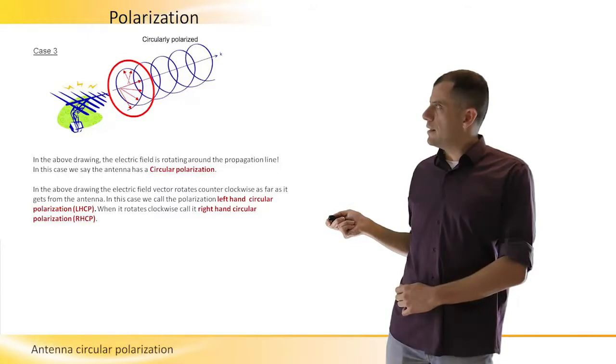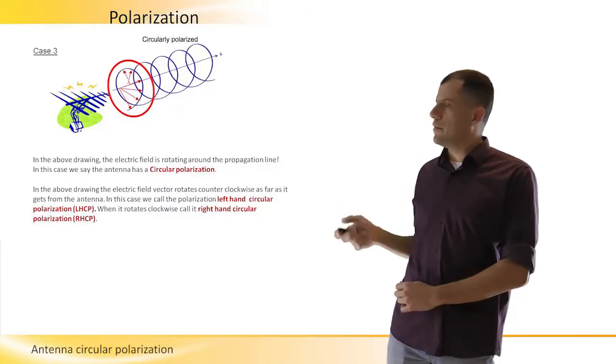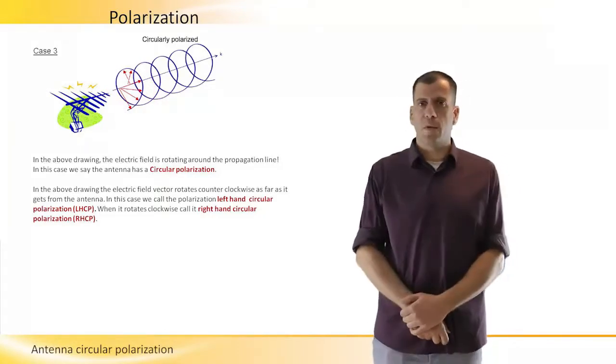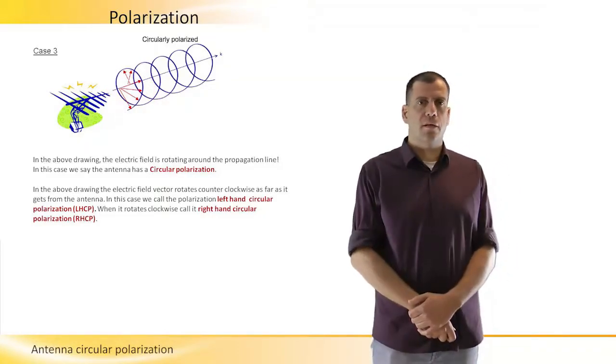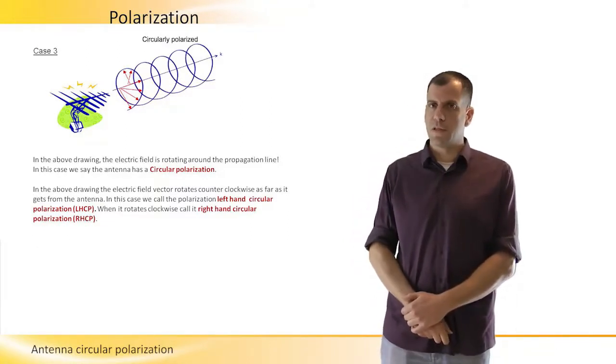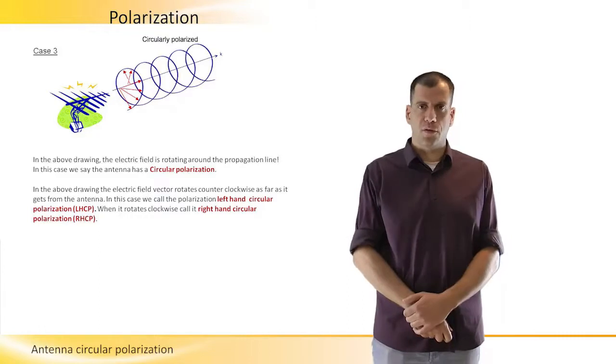If we look from the antenna towards the direction of the propagation of the planar wave, then we will see the electric field rotating counterclockwise, which is the left-hand circular polarization.